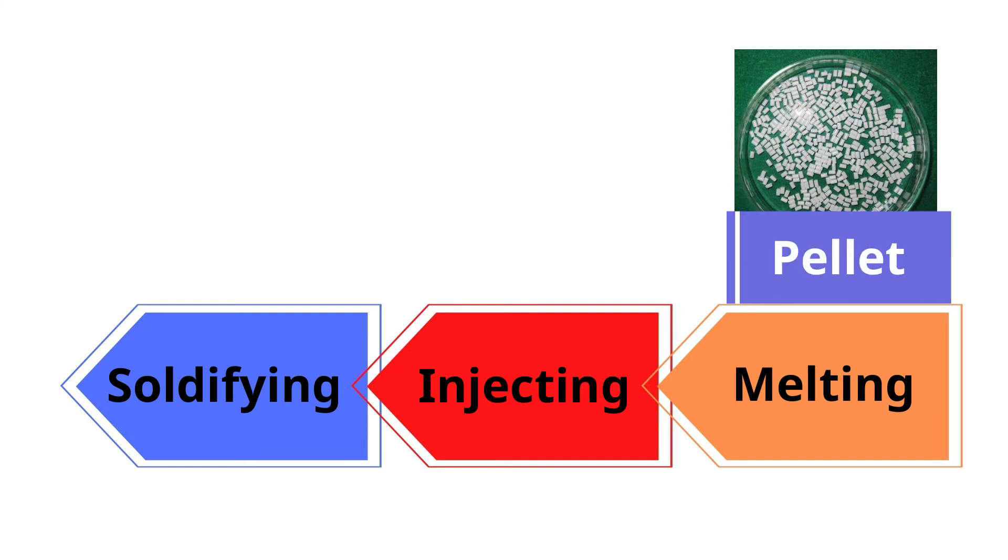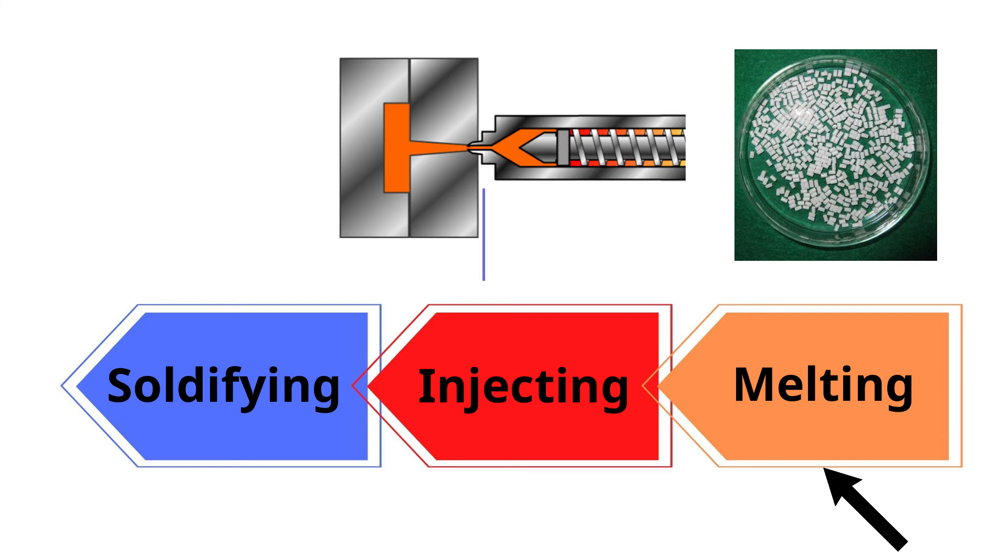First, melt this plastic pellet in a steel pipe called cylinder. Second, put this melted plastic into mold, which is a steel block having a product-shaped hole. And then, wait until the hot melted plastic material to become cool and hardened. After that, take it out from the mold, then you can get a plastic product.